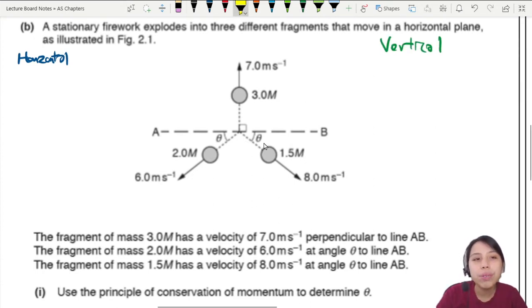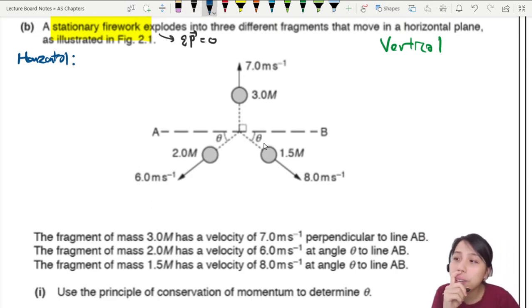So stationary firework tells me a clue that in the beginning, before anything happened, the total momentum is zero in all directions. Nobody moving. So after the explosion, who got horizontal component? Look and see, look and see.